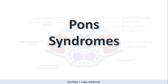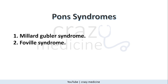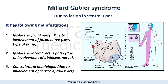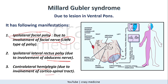Moving forward to pons syndromes. The two most important pons syndromes to remember are Millard-Gubler and Foville syndrome. Millard-Gubler syndrome is due to a lesion in the ventral pons. It involves: first, the facial nerve nucleus causing ipsilateral facial nerve palsy — remember, it is a lower motor neuron type of palsy. Next, involvement of the abducens nerve causing ipsilateral lateral rectus palsy, and contralateral hemiplegia due to involvement of the corticospinal tract.